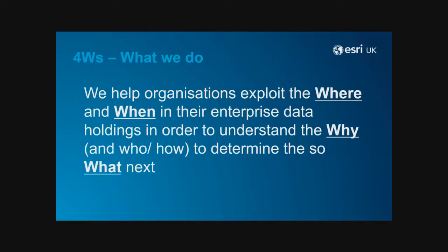So what is it we actually do? We provide a system of technology to organisations that allows them to exploit the where and the when in their enterprise data in order to understand the why, and for police and national security, the who and the how, to determine the so-what next — the four Ws. It's so much more than just visualising maps. For example, an insurance company will take your information — age, occupation, vehicle — exploit the where and the when, understand the why, which is whether they're going to insure you, and determine the so-what next: how much it's going to cost. All done without a map, because it's actually a decision-making tool.